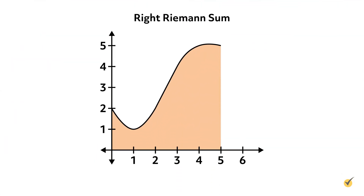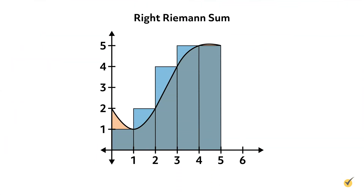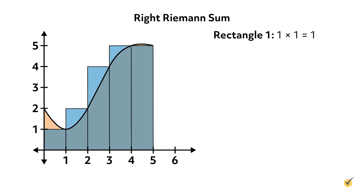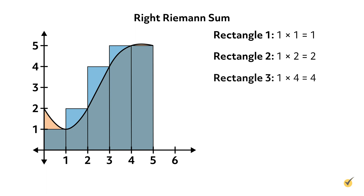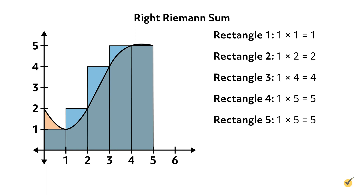Similarly, the rectangles for a right Riemann sum would look like this, with each rectangle drawn up to the height of the curve on its right side. These rectangles have heights of 1, 2, 4, 5, and 5 respectively. And since each of these rectangles again has a width of 1, those areas add up to 17 square units.